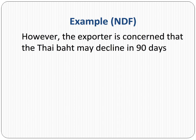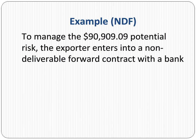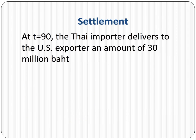However, the exporter is concerned that the baht may decline in 90 days in the spot market. If the spot rate moves to 33 baht per dollar when the payment is received, the exporter would wind up getting ninety thousand nine hundred and nine dollars lower than originally anticipated. To manage the potential risk, the exporter enters into an NDF contract with the bank. The bank quotes the 90-day forward rate of 30 baht per dollar for purchasing the baht, helping the exporter lock in a receipt of 1 million dollars. The bank is essentially betting that the baht is going to rise in value.